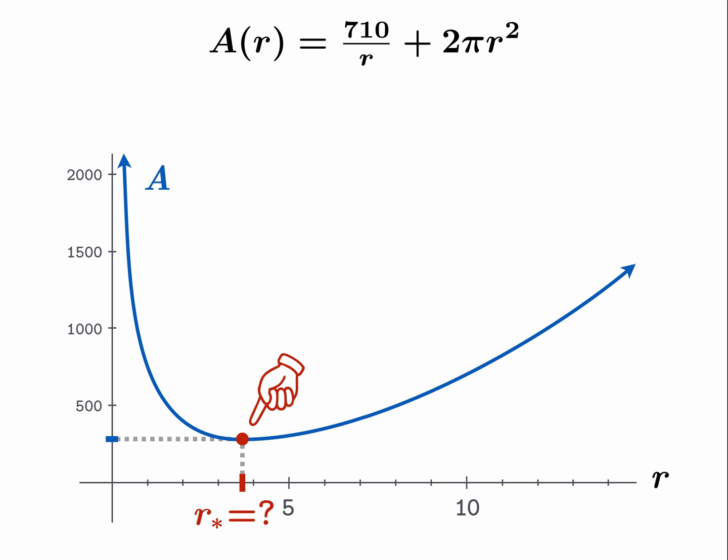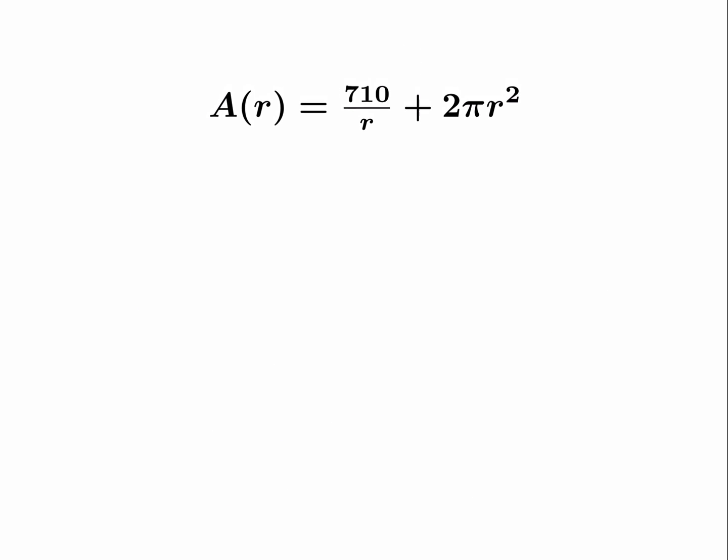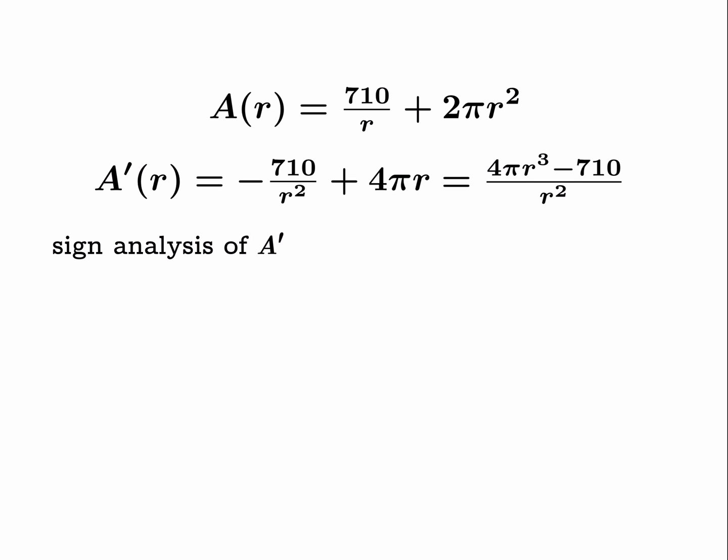So here we are with the original function. We take the derivative to find the critical numbers. Now we could just set this equal to zero and work from there, but let's rewrite this as one fraction—there's an advantage to doing this. So here is our formula for the derivative written as one fraction, and we need our sign analysis of A prime. We have this domain, the open interval from zero to infinity. We'll notice that r squared is positive when r is greater than zero.